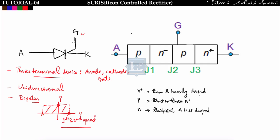SCR is a three-terminal, four-layer device. The four layers are denoted as P, N-minus, P, N-plus. The plus and minus signs denote heavily and lightly doped layers: N-plus is heavily doped, N-minus is lightly doped, and P is normally doped. There are three junctions: J1, J2, and J3.